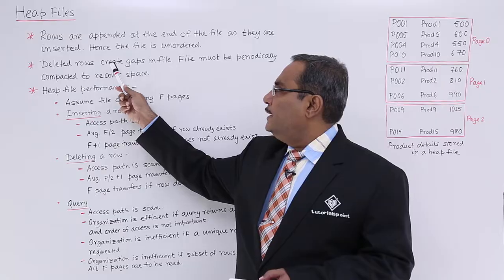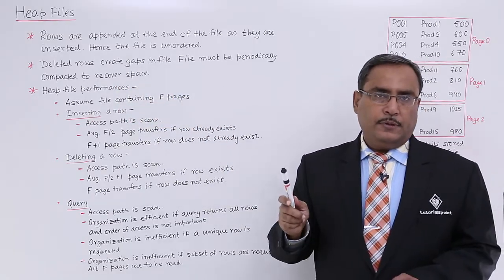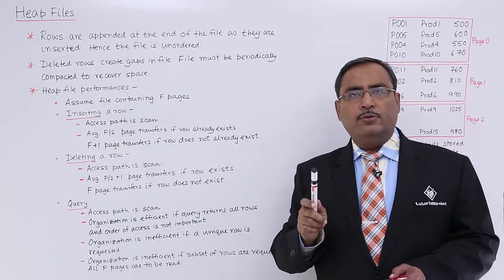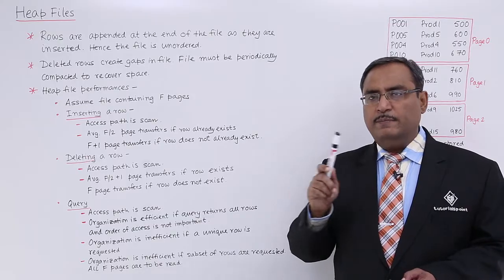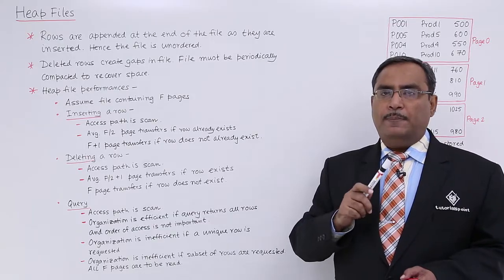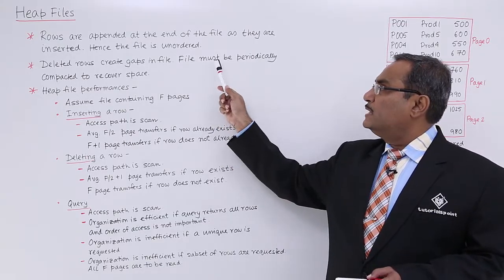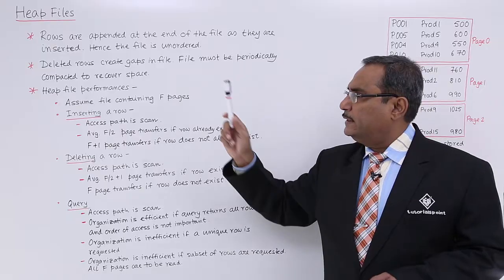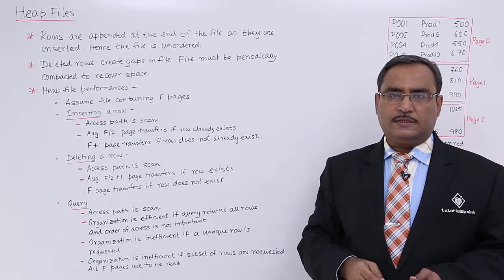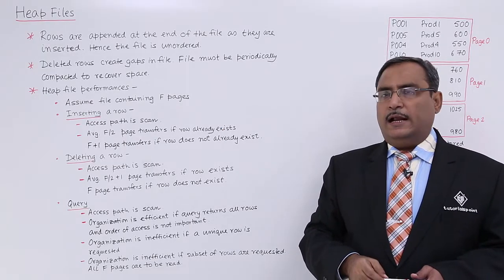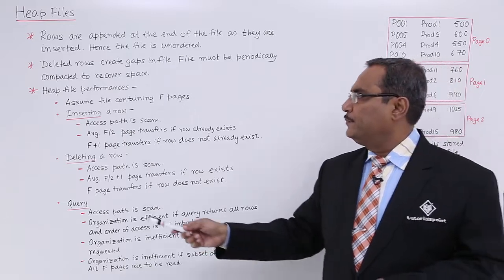Deleted rows create gaps in the file. Whenever one row gets deleted, it leaves behind a blank space. Therefore, the file must be periodically compacted to recover the free spaces, and it requires this periodical compaction.